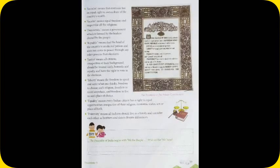'Socialist' means that everyone has an equal right to own a share of the country's wealth. 'Secular' means equal freedom and respect for all religions. 'Democratic' means a government which is formed by leaders elected by the people. 'Republic' means that the head of the country is an elected person and does not come to power through any other process than elections. 'Justice' means all citizens, irrespective of their background, should be treated fairly, honestly, and equally, and have the right to vote in elections.